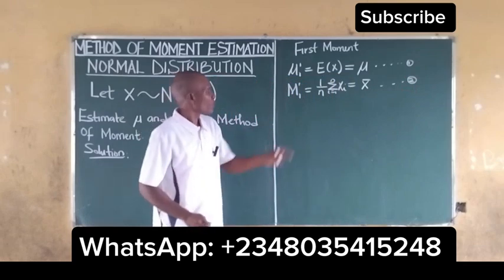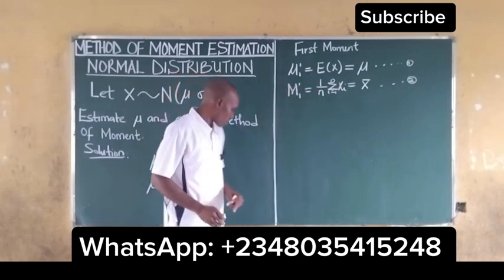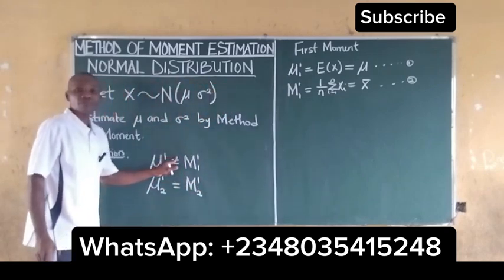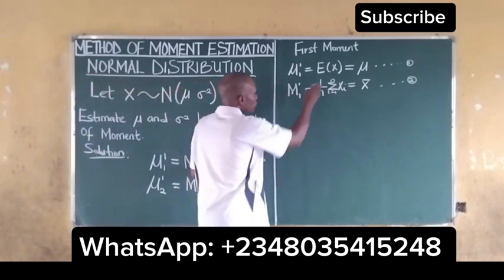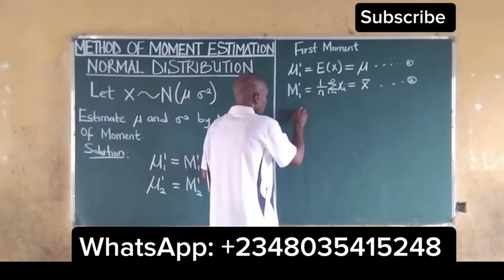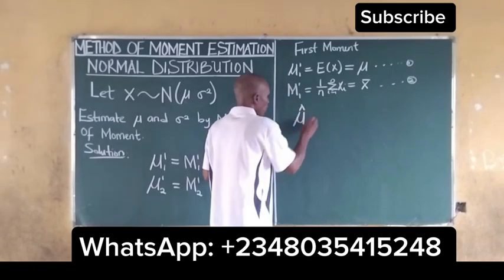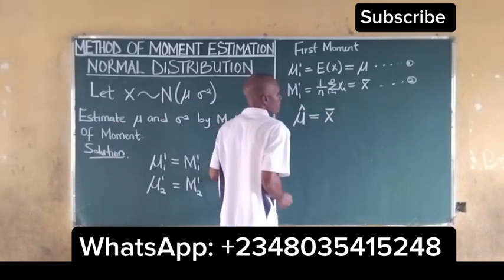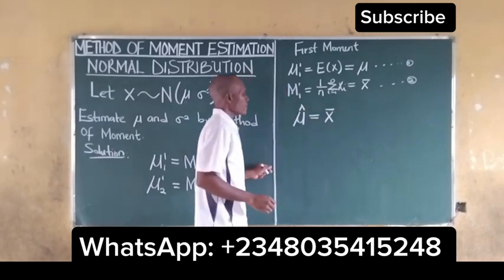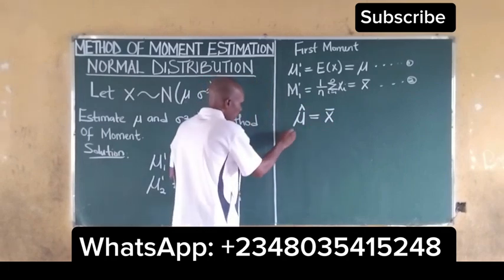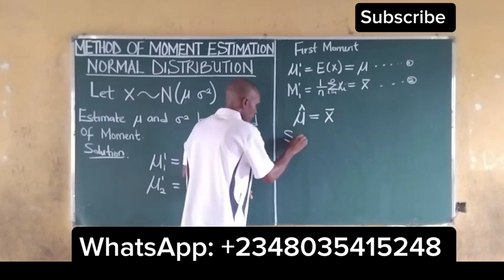To get the method of moments solution, we combine equation 1 and equation 2. Combining these two equations, our estimate of the population mean is equal to x̄, which is our sample mean.